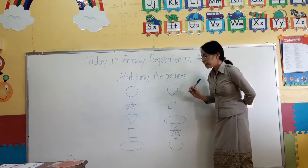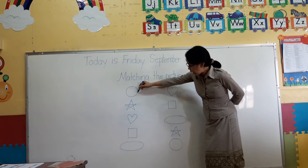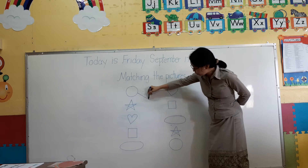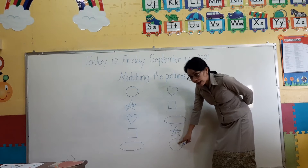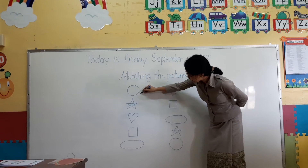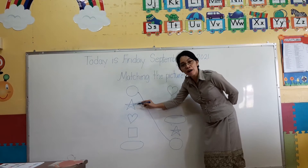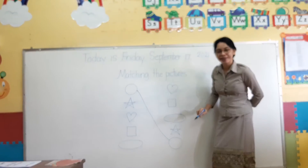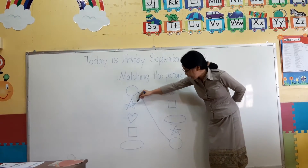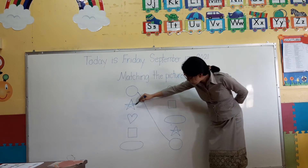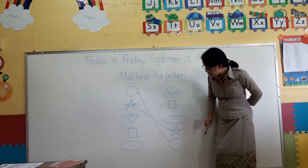Now we will match the picture. Which pictures are the same? Then we will draw a line. This is a circle — where is the other circle? Yes, this is a circle. Next, this one is called star. Have you seen a star? You can see the twinkling star at night. Where is the other star? Are they the same, children? Yes, so you draw like this.